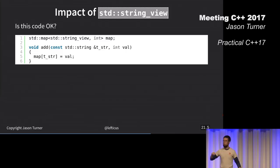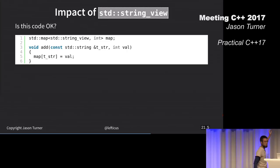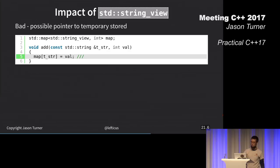I have a map of a string view to an int, and I am looking up a key by a string. Does it compile? Yes, it compiles. Why is it bad? Lifetime. Because I am creating a string view to a potentially temporary string object, and then I'm possibly storing that in the map.